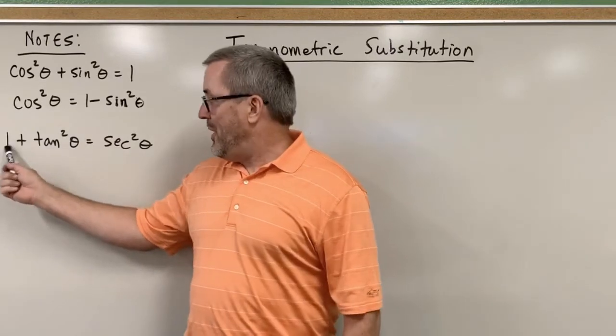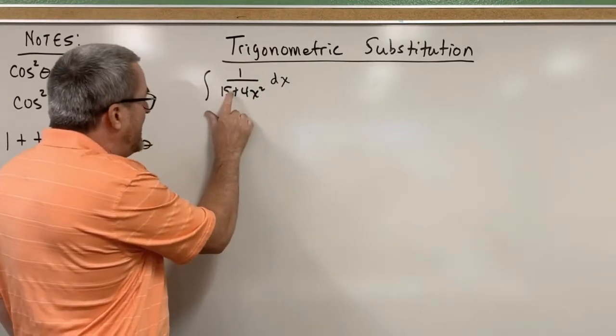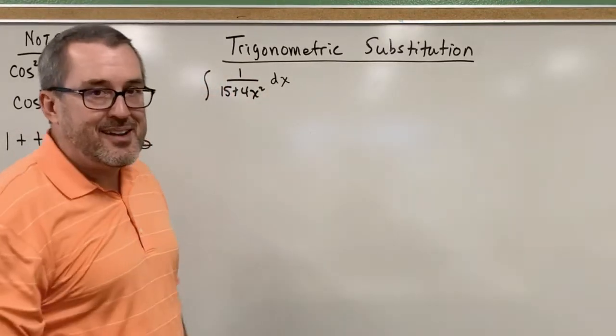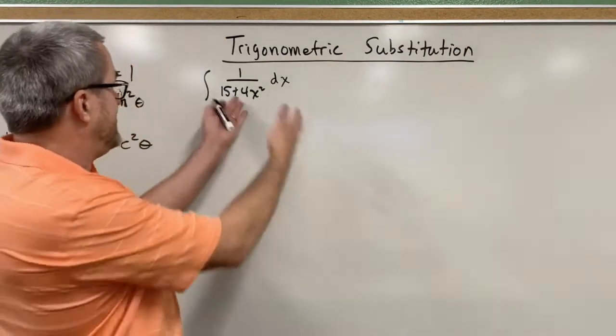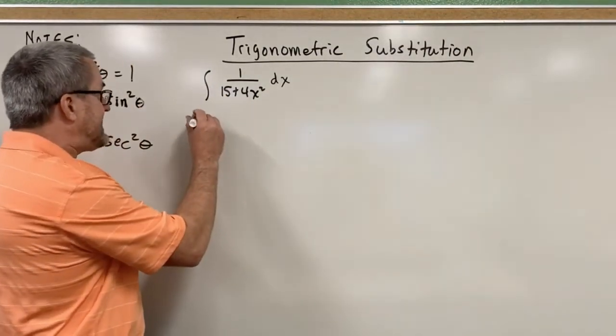Why? One plus tangent squared is secant squared. Can you imagine if this denominator said one plus tangent squared? We would be in good shape. Now at this stage, it's not close to saying that, so we have some work to do to get it to say that.